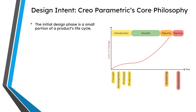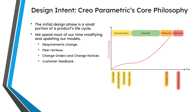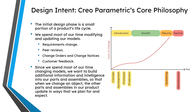Design intent is our guiding philosophy for how we work in Creo Parametric. Design intent recognizes that the initial design phase is a small portion of your product's lifecycle. You might spend a few hours, a few days, maybe a couple of weeks coming up with the initial concept, but then there are going to be changes — requirements change, design reviews bring feedback, change requests, or customer input. As a result, you spend most of your time making changes to your model. We want to build additional information and intelligence into our CAD models so that when we change one thing, the changes are propagated to related features, parts, and assemblies in ways that we plan for and expect. This is design intent.